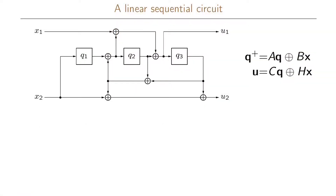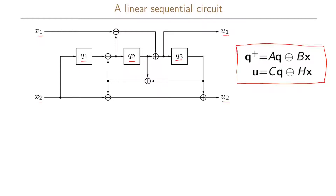Let us look at this example of a linear sequential circuit. We have two inputs denoted x1 and x2, two outputs denoted u1 and u2, and three state variables q1, q2, and q3. What we want to do now is to write this linear sequential circuit in a specific matrix form.